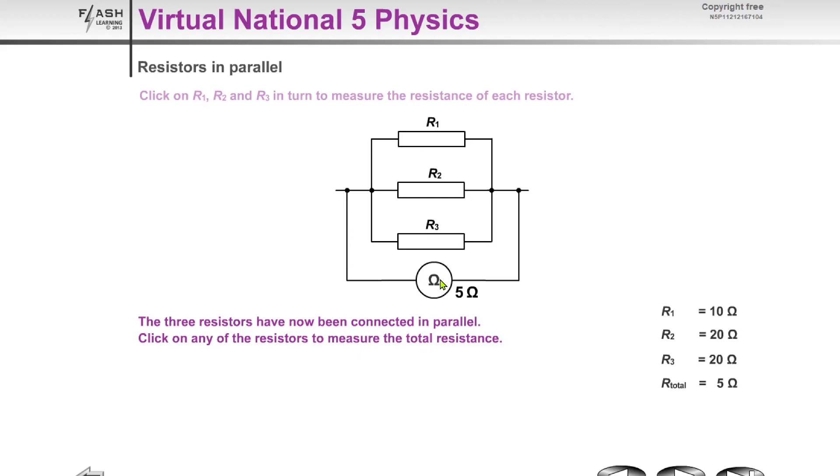Lastly, a quick top tip is that the total resistance of resistors in parallel will always be smaller than the smallest resistance value. So here our smallest resistance value was R1, which was 10 ohms, and notice how our total resistance of those in parallel is 5 ohms. So this is actually true for any parallel circuit where you have resistors or resistance values—the total resistance is smaller than the smallest resistance value.